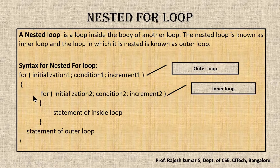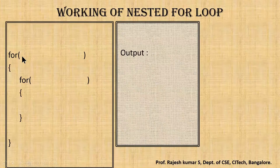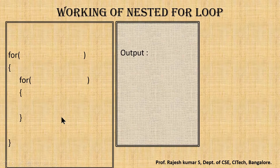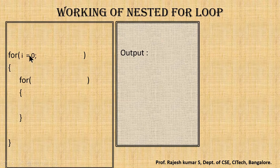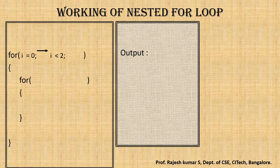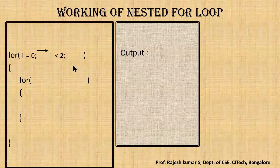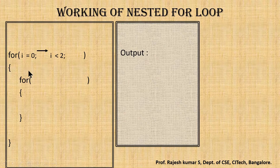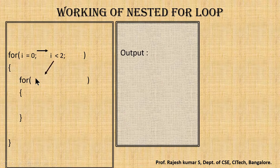Let us see the working principle — how does the nested for loop work? I've given a skeletal structure here. First, the outer for loop variable is initialized: i is initialized with the value zero. Then we check the condition. The condition is i less than two — that is, zero less than two. If the condition is true, it will enter inside the outer for loop. Once inside, there is one more for loop — the inner for loop — and we initialize its variable j.